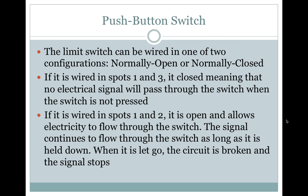Push button switch. The limit switch can be wired in one of two configurations: normally open or normally closed. If it is wired in spots one and three, it is closed, meaning that no electrical signal will pass through the switch when the switch is not pressed. If it is wired in spots one and two, it is open and allows electricity to flow through the switch. The signal continues to flow through the switch as long as it is held down. When it is let go, the circuit is broken and the signal stops.